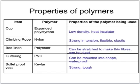Bed linen is made of polyester because it can be stretched to make fibres that can be put through the weaving loom, and also it can be dyed into different colours. Guttering on the outside of buildings is made of PVC or polychloroethene because it can be easily moulded into different shapes, it's waterproof, and isn't affected by water. Whereas a bulletproof vest is made out of a special polymer called Kevlar because it's so strong and tough.